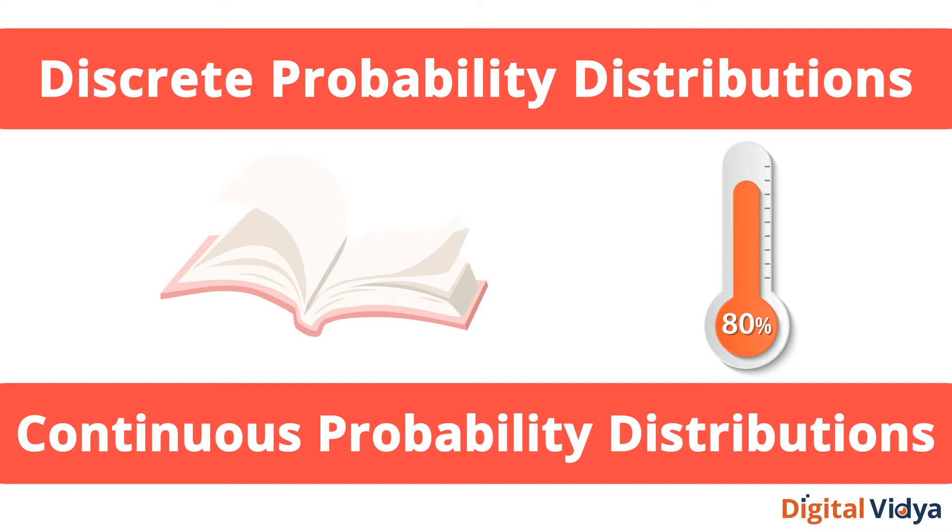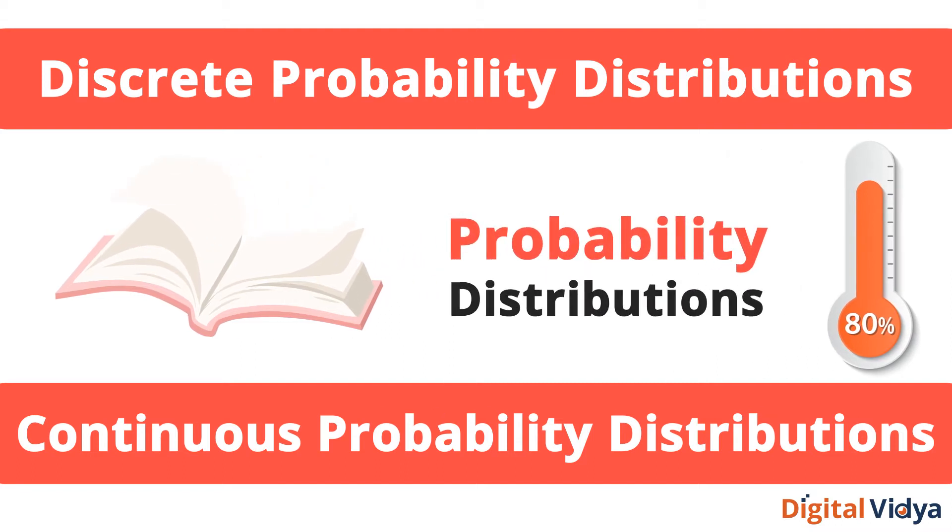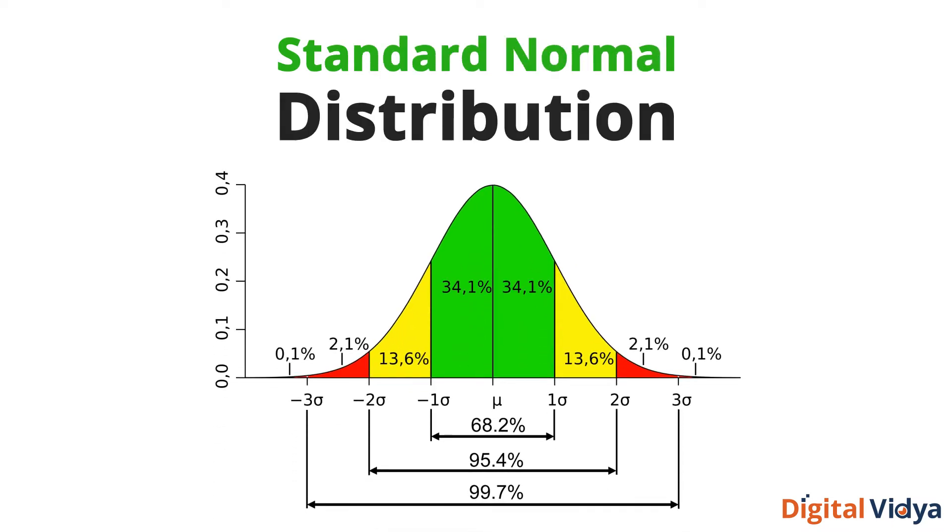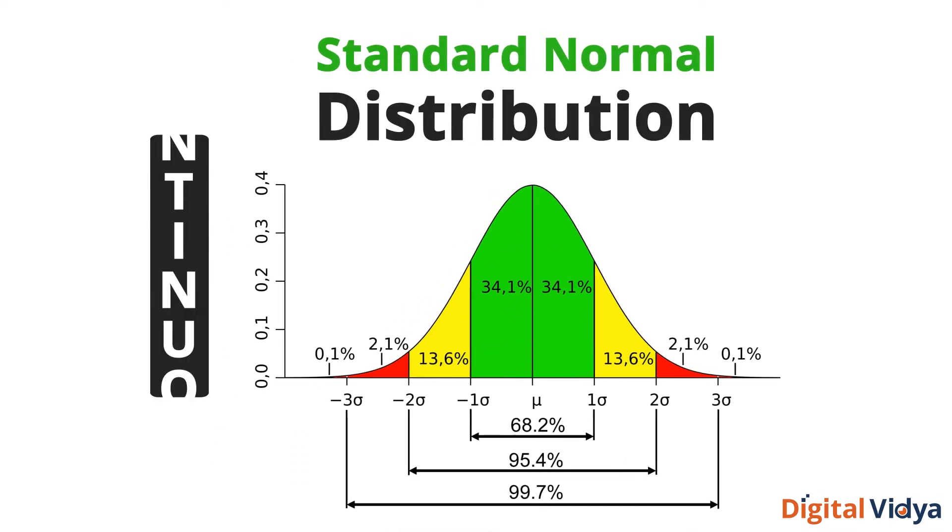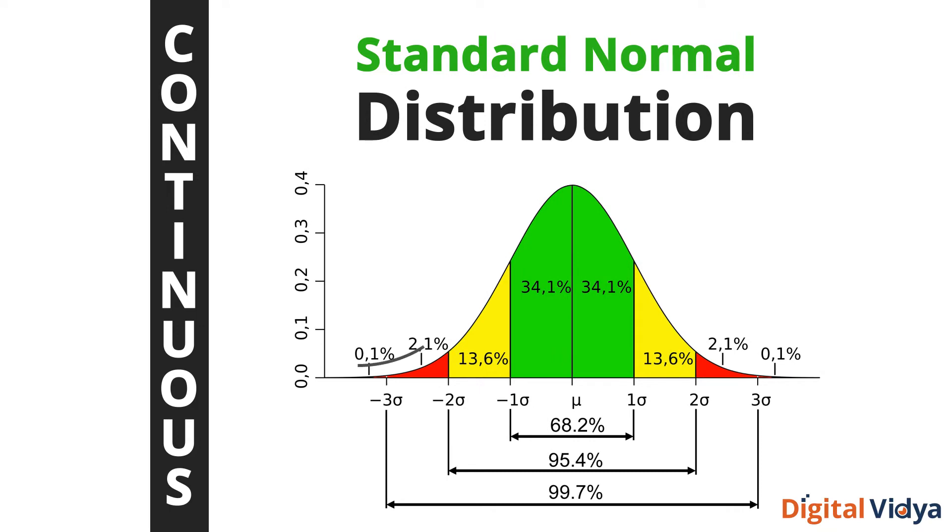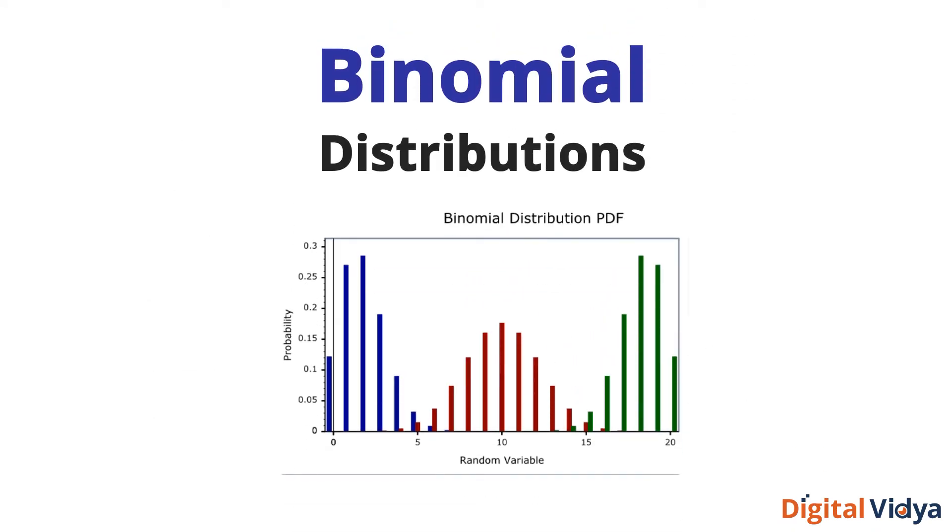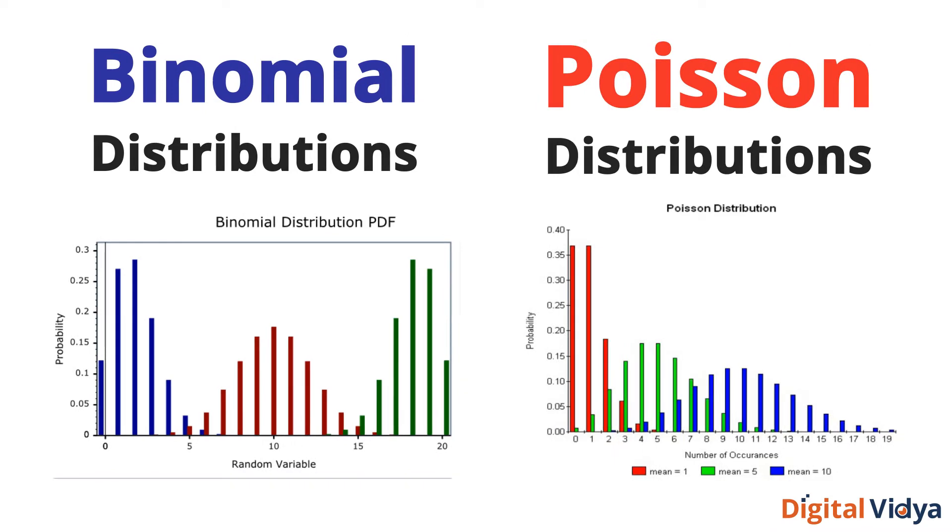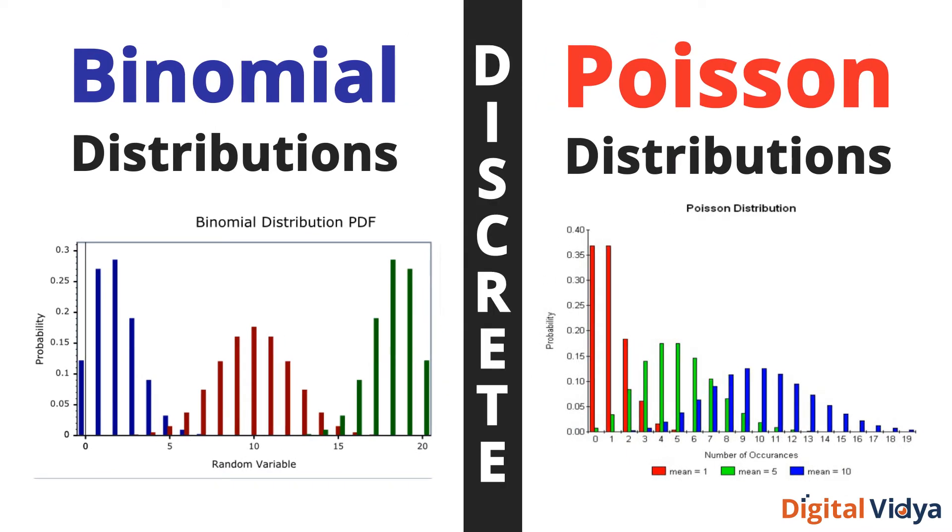Given some data, you should be able to fit the data to a probability distribution. The standard normal distribution is the most commonly used continuous distribution with the shape of a bell curve. Binomial distributions and Poisson distributions are the widely used discrete distributions.